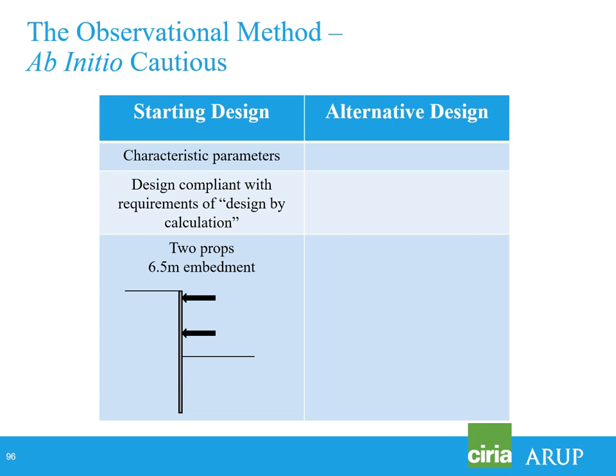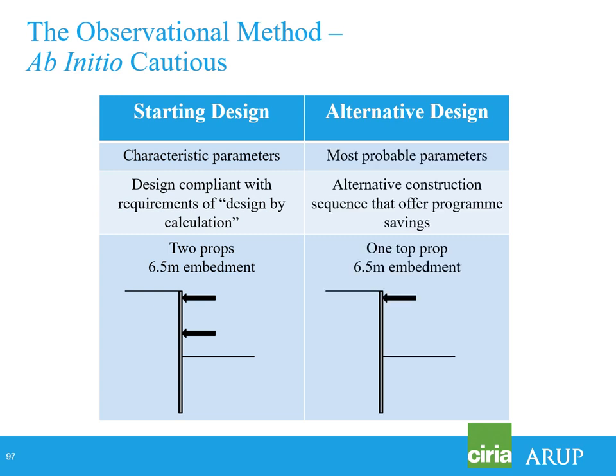Taking the ab initio cautious approach: the starting design uses characteristic parameters — fully compliant with design by calculation — requiring two props and six and a half metres of embedment. The alternative design adopts most probable parameters, and the alternative construction sequence is not installing the bottom level of props. The real savings in the alternative design are mainly programme savings, because you'll probably have to have those props ready anyway, and the wall toe length and reinforcement are already installed.